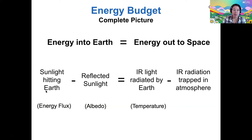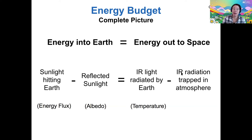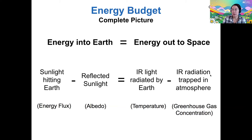So now we have the sunlight hitting Earth minus the reflected sunlight — which you can figure out from a planet's albedo — has to be equal to the infrared light that's radiated by Earth minus the amount that gets trapped in the atmosphere. This is still a simplified picture of the energy budget; the actual picture has a lot more flows of energy. The amount of IR radiation that gets trapped is directly related to the concentration of greenhouse gases in the atmosphere.